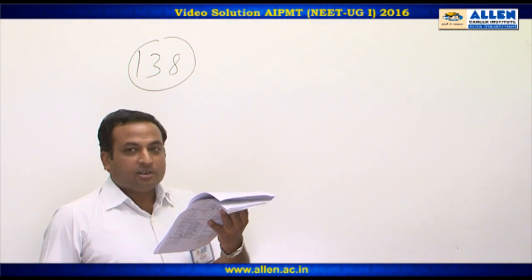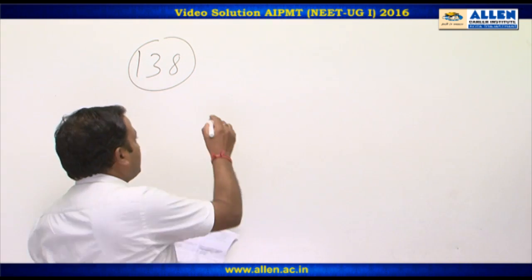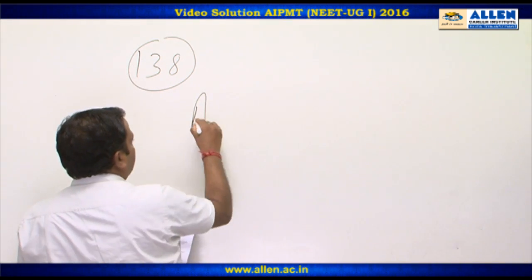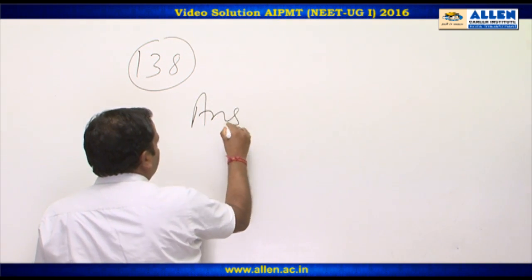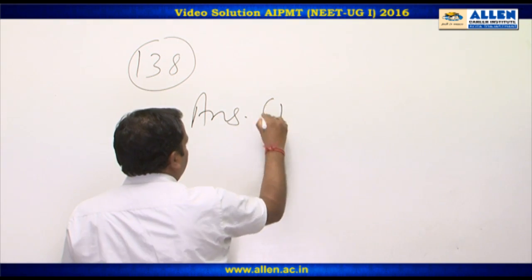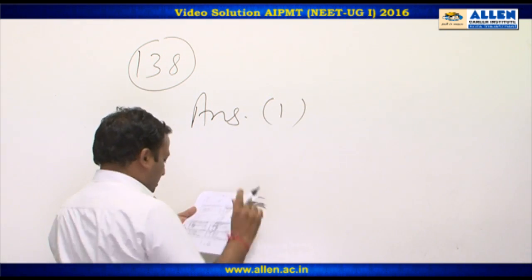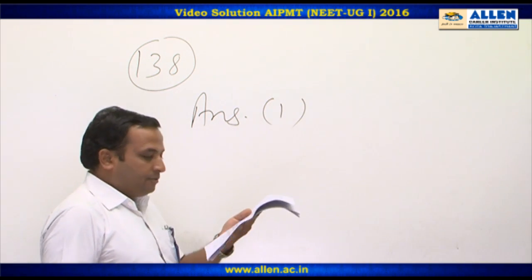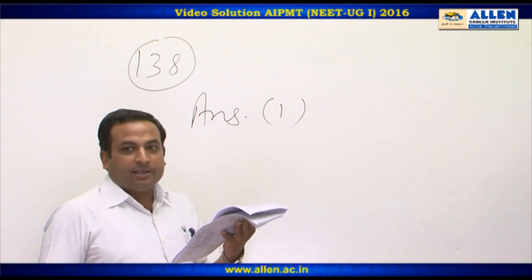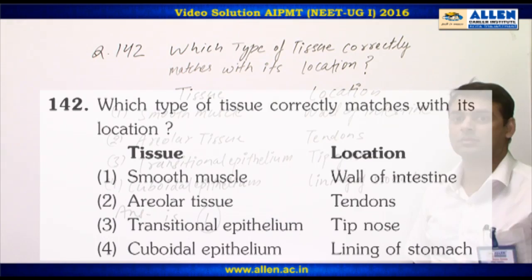So the correct answer is the first option — pitcher of Nepenthes — because it is a leaf modification, not a stem modification.